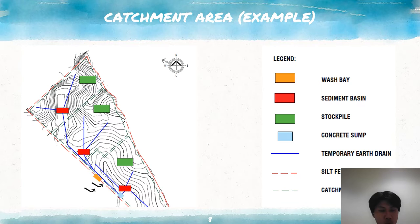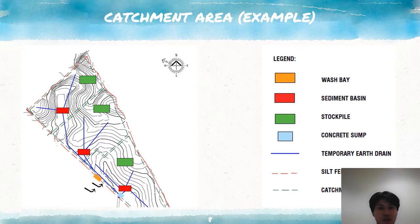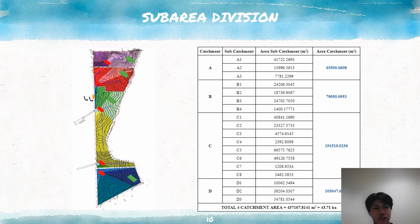We discuss the placement of the sediment basin for each zone, which is at the lowest level of each subzone. Furthermore, we propose to design a stockpile to be placed at the highest level of each subzone to keep the excavated soil. The sediment collected at the sediment basin will then be discharged to the existing drainage, and the concrete sump is also provided to slow down the flow velocity near the existing drainage. The silt fence is also provided around the catchment area to retain the sediments on site. This is the example of catchment area A, showing the division of each zone into subzones such as A1, A2 and A3, to ease the cooperation later in the design phase.